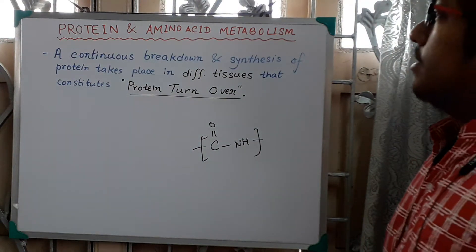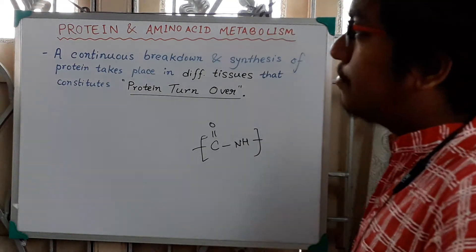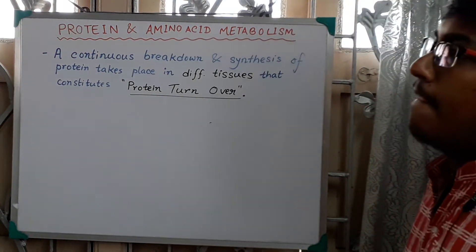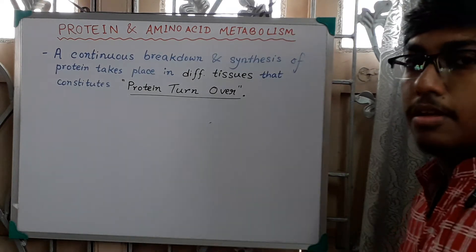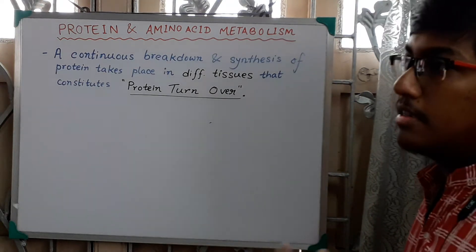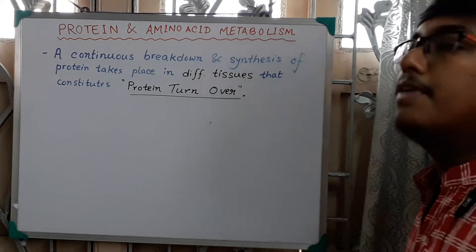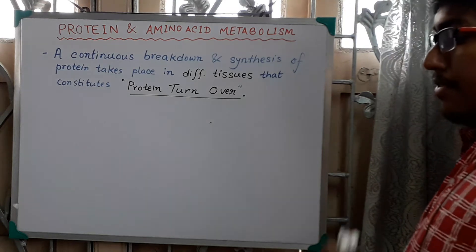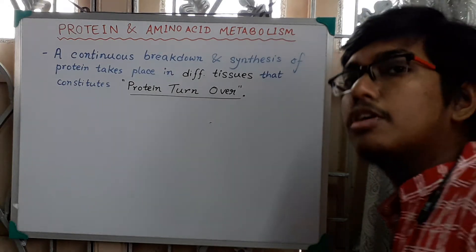Now we will discuss amino acid metabolism. The first thing: what is amino acid metabolism? We have to know some terms. The first important term is protein turnover. Protein turnover means there is a continuous synthesis and breakdown of protein molecules that takes place in our different tissues in our body. Around 1 to 2 percent of our total body protein will continuously turn over daily.